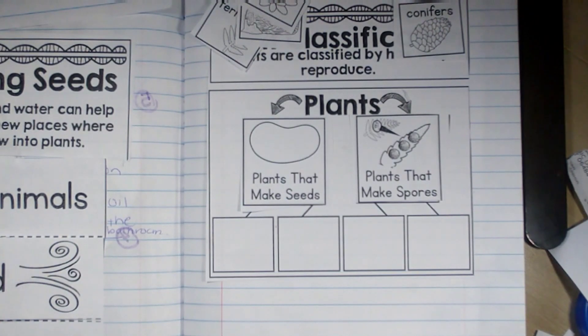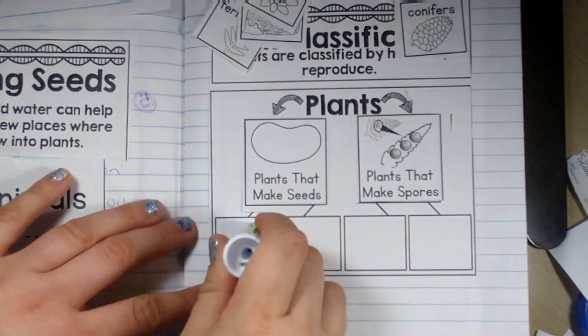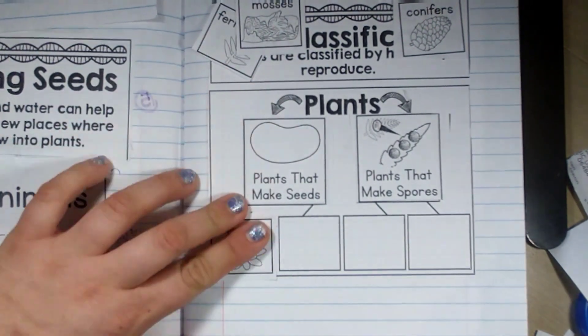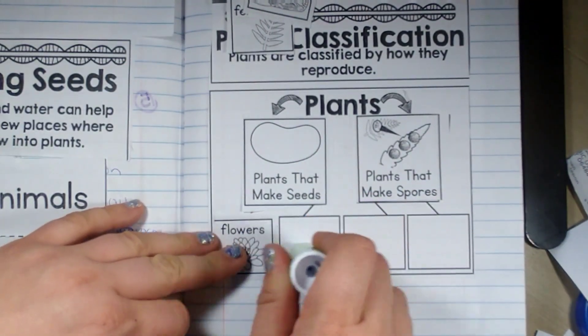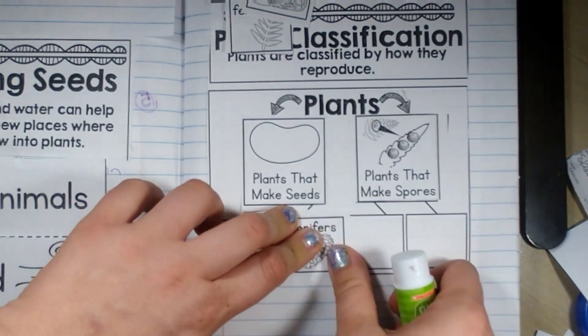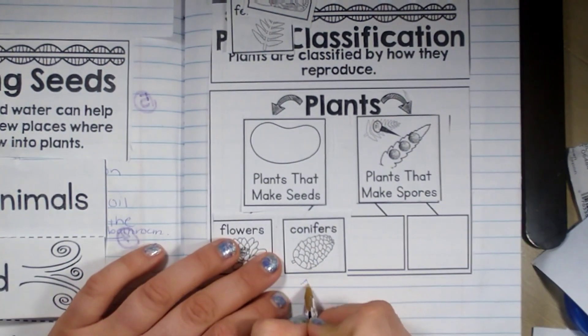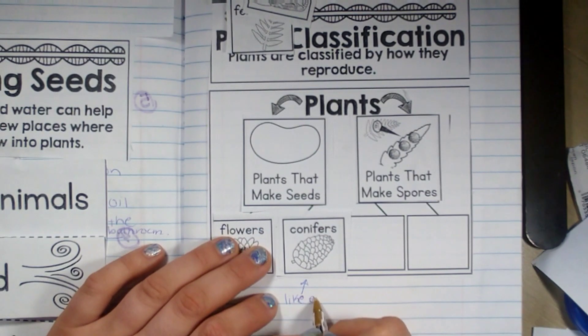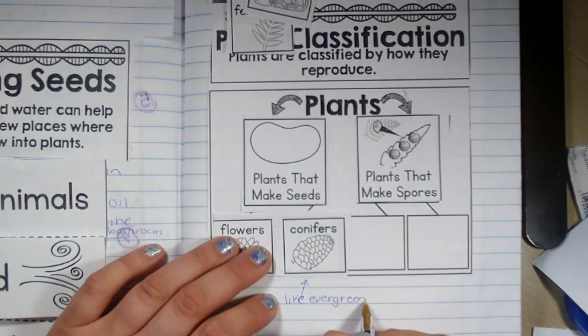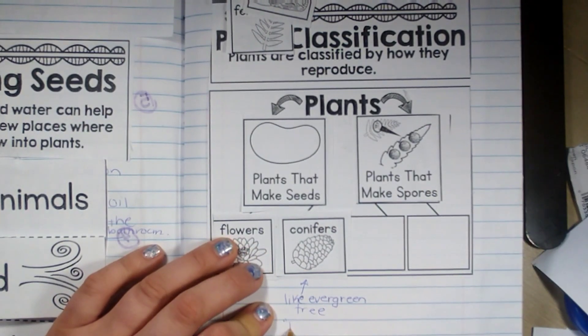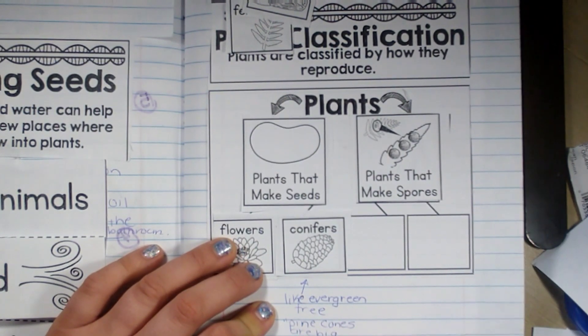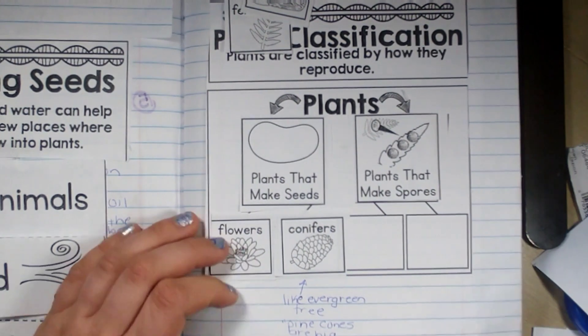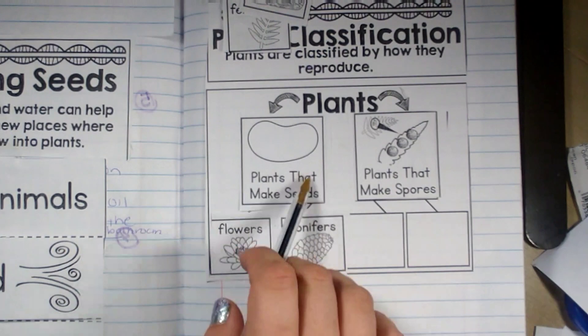So plants that make seeds are flowers, like we've talked about in the past, and conifers. Now conifer is like an evergreen tree, like a Christmas tree. Do you know that pine cones are big seeds? Pine cones are big seeds, so a conifer and a flower make seeds.